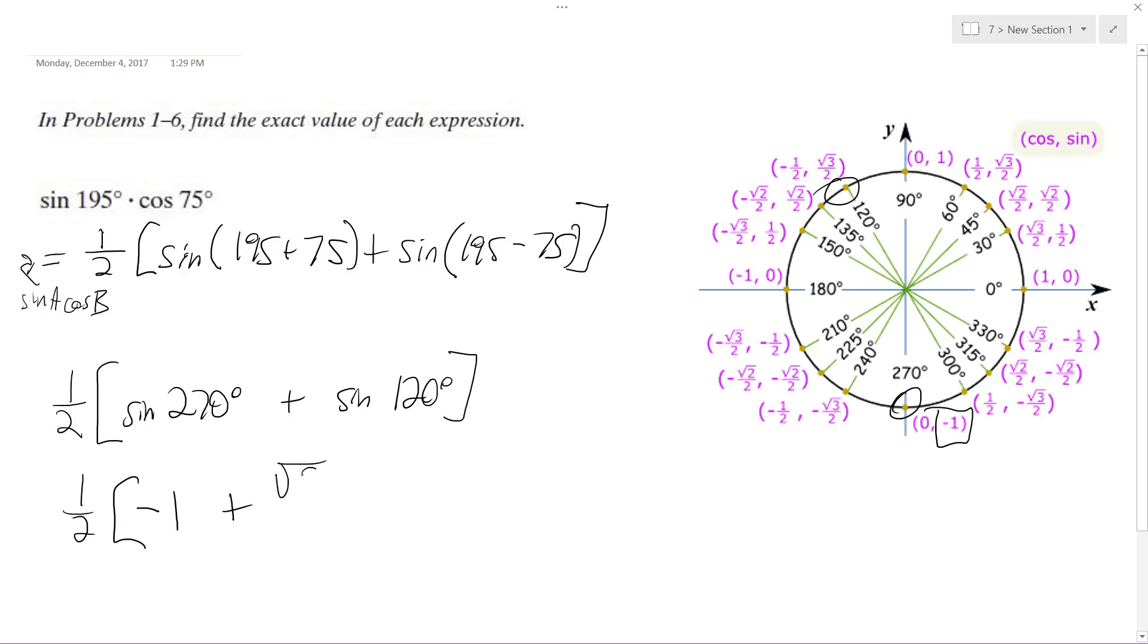root three over two. So what we end up with is negative one half plus root three over four, or depending on when you break it down, just negative two plus root three all over four.